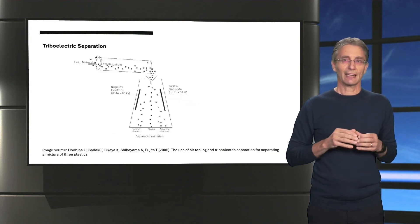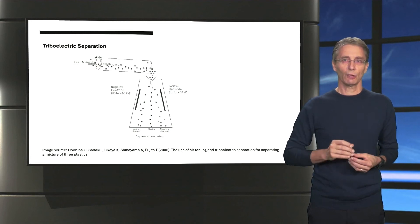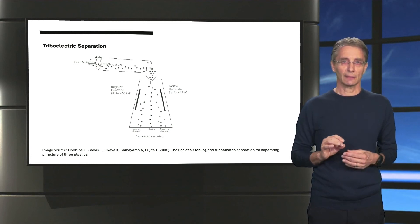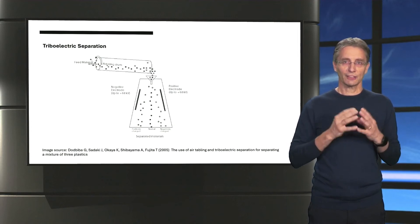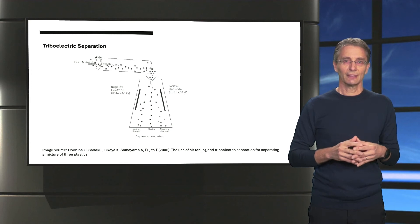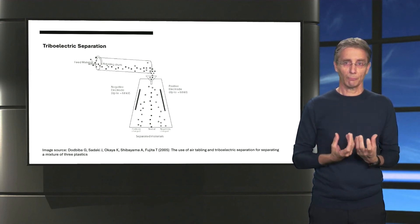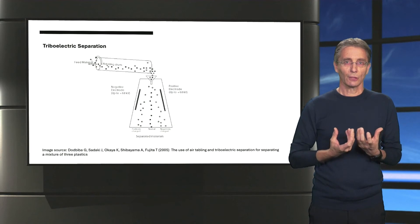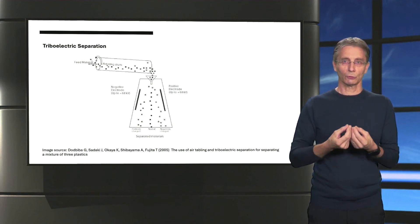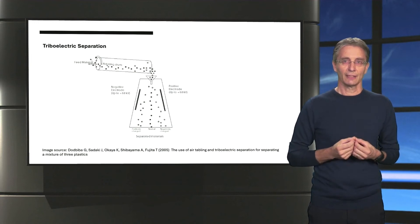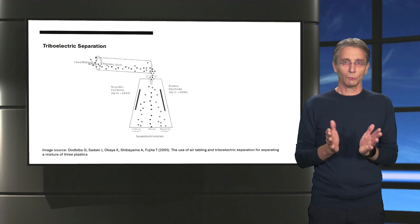Further, electrostatic properties can be used to separate polymers. This is known as triboelectric separation. First, the plastic particles are shaken in a charging unit, in which they rub against each other. This causes different polymer particles to become charged. A conveyor belt then guides these particles towards an electrostatic field that deflects the differently charged particles into different containers.